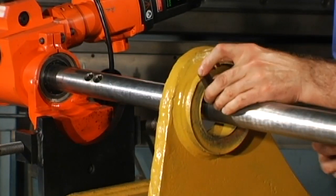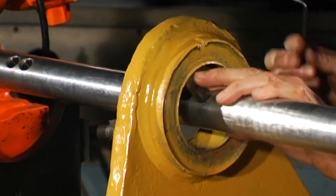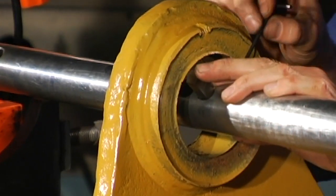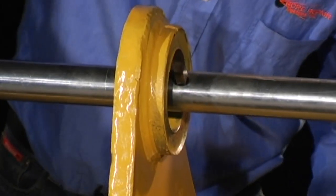Install the tool bit in a tool port in the boring bar adjacent to the bore to be machined. Adjust the tool bit height for the first pass of machining.